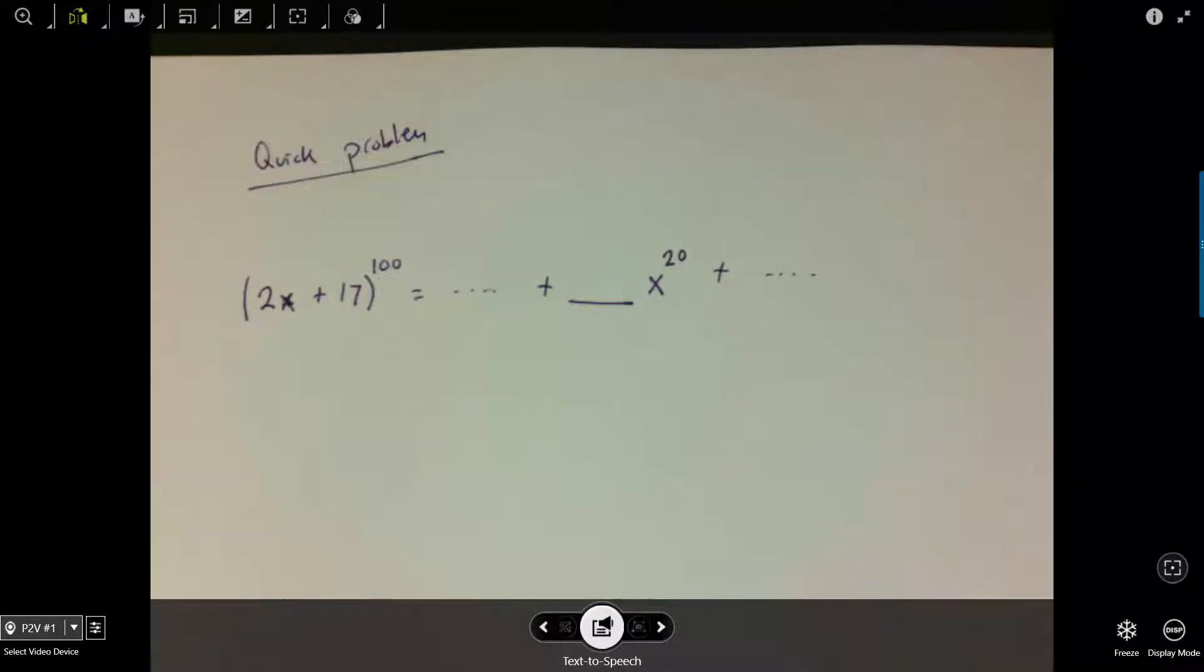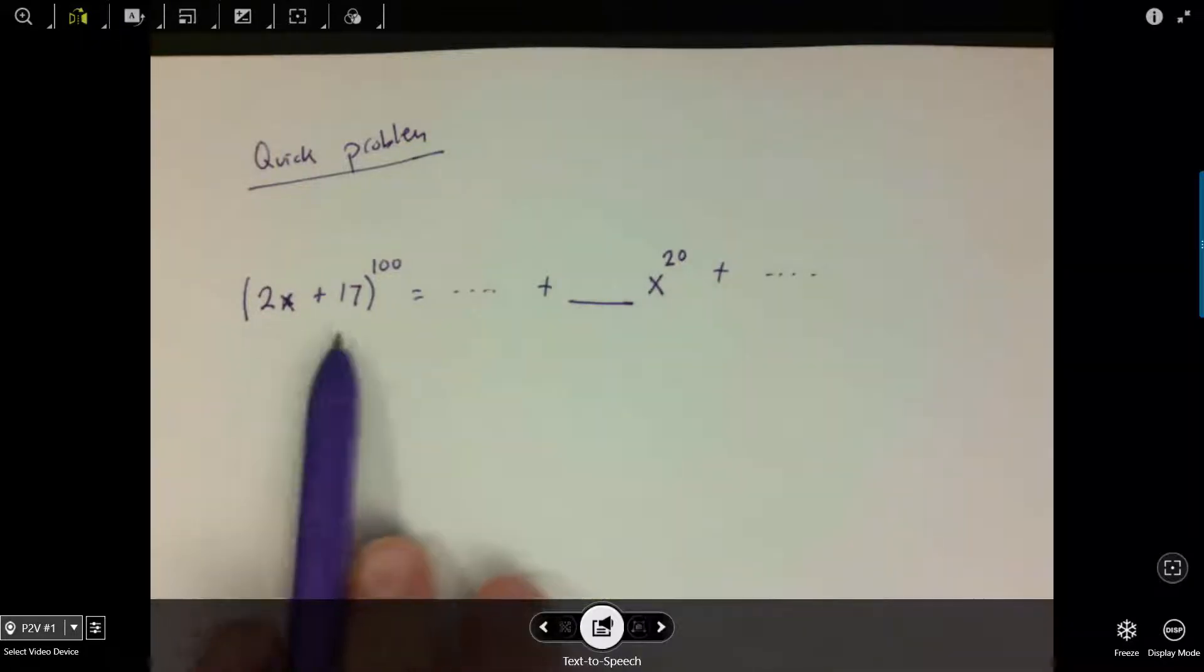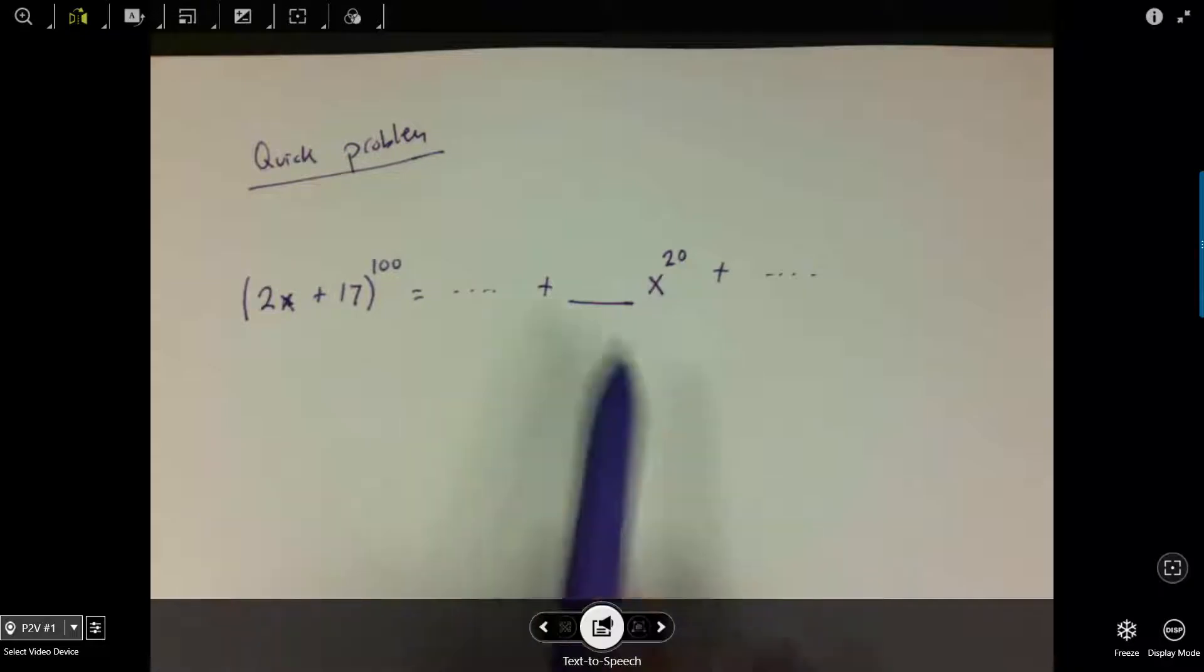So let's do a quick problem. If I've got (2x + 17) to the hundredth power and I want to know what is the term that has x to the 20th,